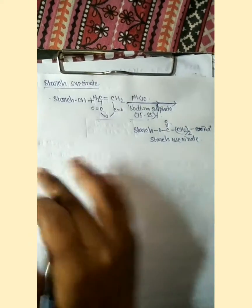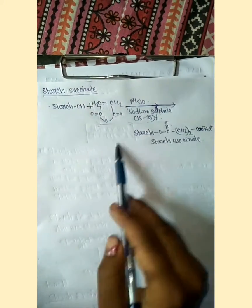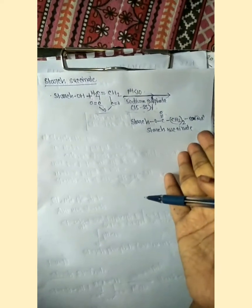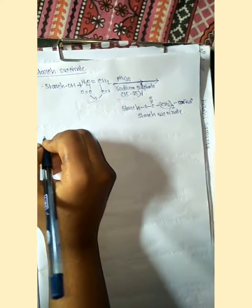So starch succinate is prepared. You can again explain this reaction in language or as a flowchart, which will be easy to remember.